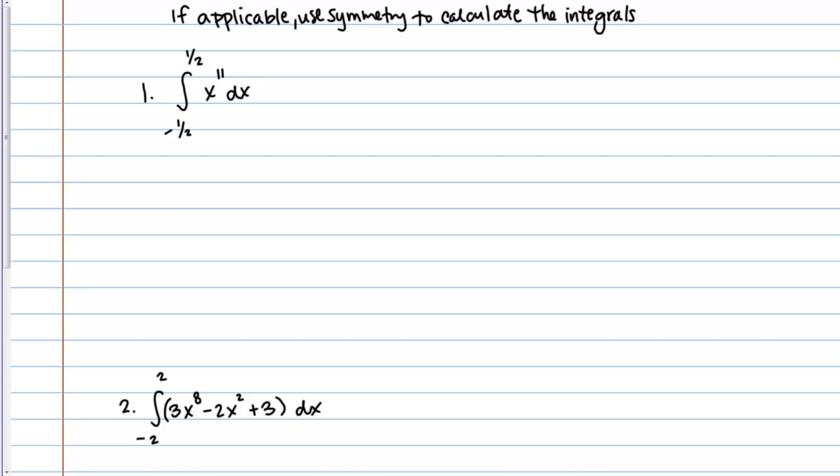To check if something is even or odd, we look at what f of negative x is. If f(-x) equals f(x), then it's even. If f(-x) is negative f(x), then it's odd, or it can also be neither.